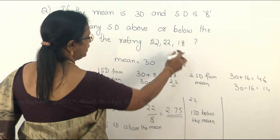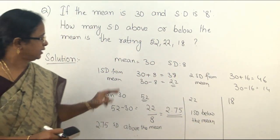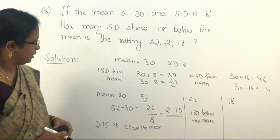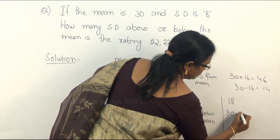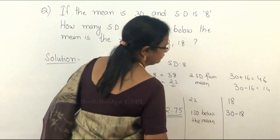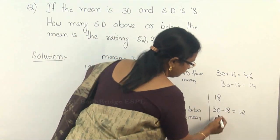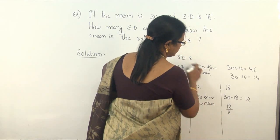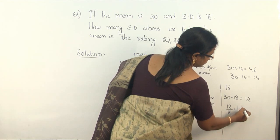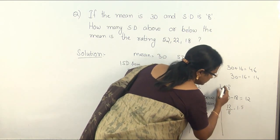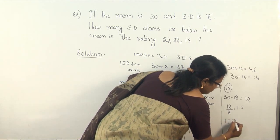Next we solve for 18. The value 18 does not fall on a standard boundary, so we find the difference between the mean and the value: 30 minus 18 equals 12. This 12 is below the mean. Dividing 12 by the standard deviation of 8 gives 1.5. So 18 is 1.5 standard deviations below the mean.